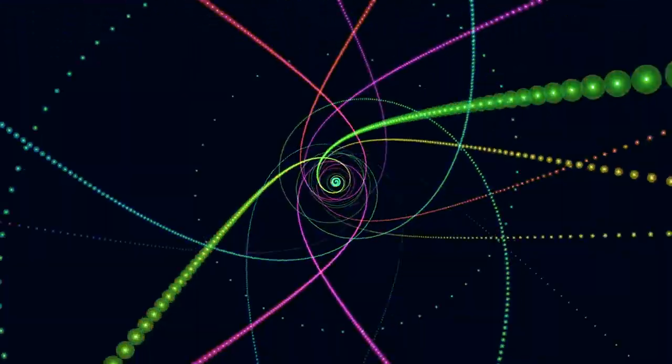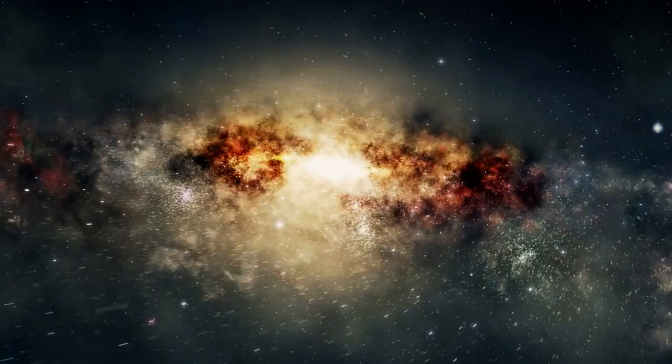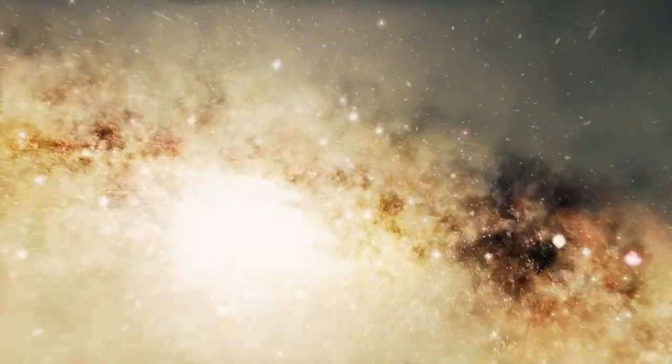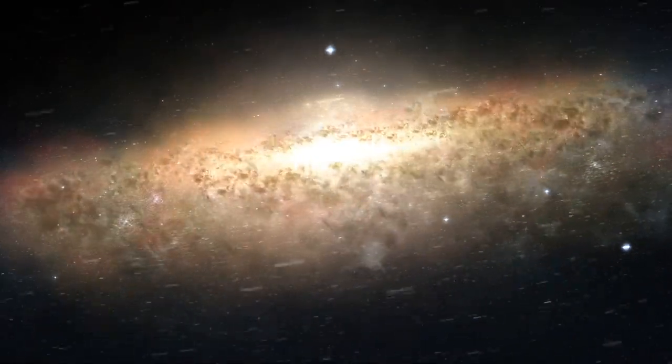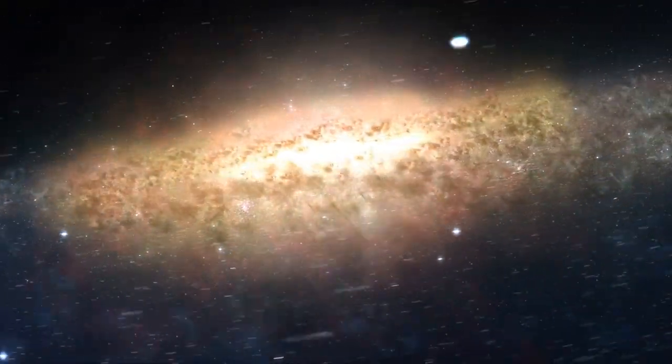Another feature that baffles scientists is the Sombrero Galaxy's halo. A halo is a spherical region of stars and gas that surrounds a galaxy, and it is usually very faint and diffuse, but the Sombrero Galaxy's halo is very bright and dense, and it contains a lot of metal-rich stars.